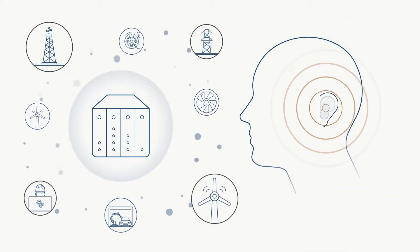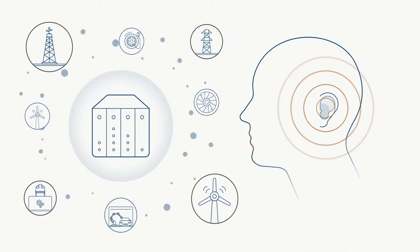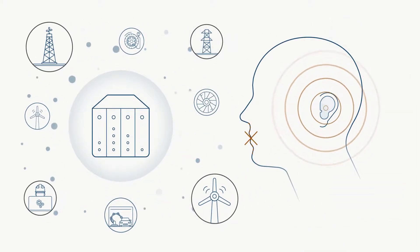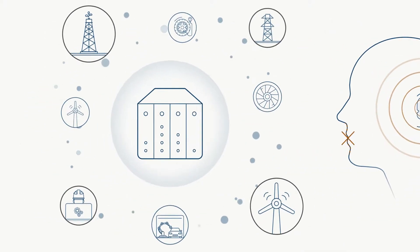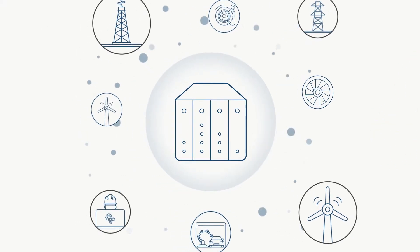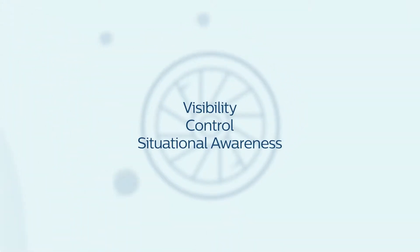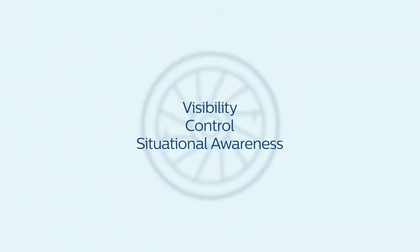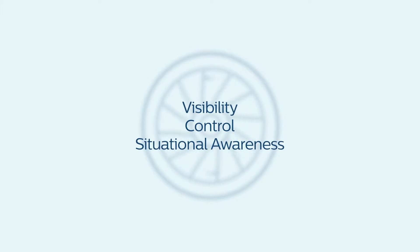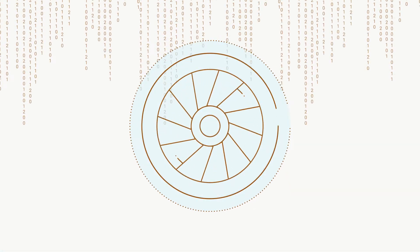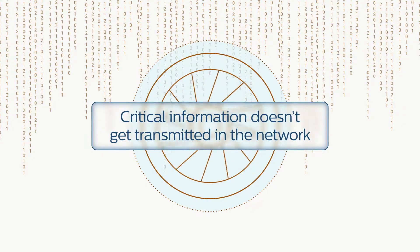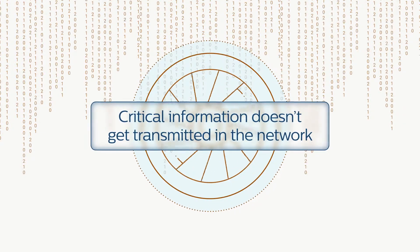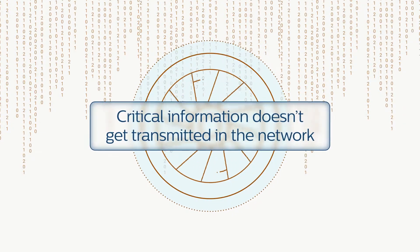Merely listening to the network relies on current activity and overlooks critical information. To enhance visibility, control, and situational awareness beyond network monitoring, you need to get critical information from devices that doesn't get transmitted on the network and identify local changes.